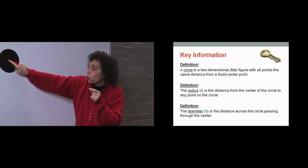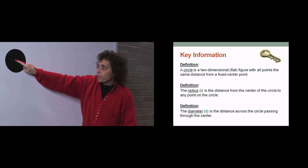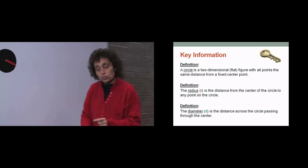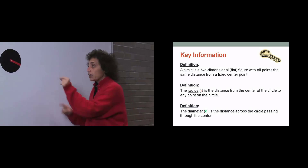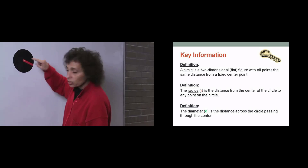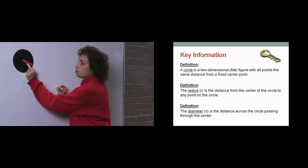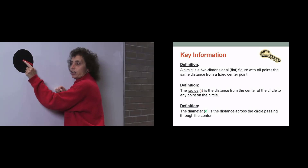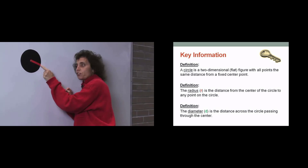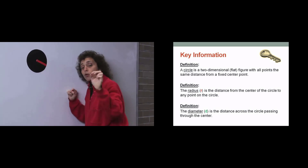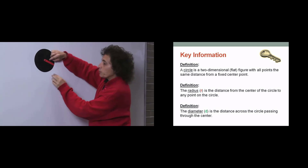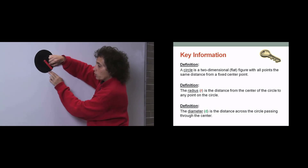The given point is called the center. Every point is the same distance from this center. We have a radius of the circle — a radius is a line segment that goes from the center of the circle to a point on the circle. The plural of radius is radii. There are an infinite amount of radii in a circle, and they're all the same, because points are equidistant from that given point.